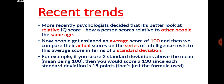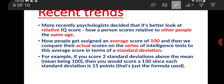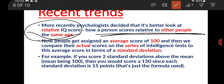Now, what are the recent trends? The modern approach uses a relative IQ score — how a person scores relative to other people of the same age. People are assigned an average score of 100, and their actual scores are compared to this average on a series of intelligence tests in terms of standard deviation.